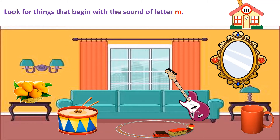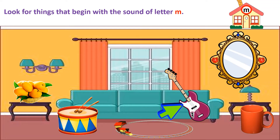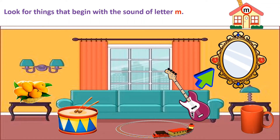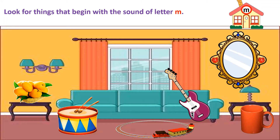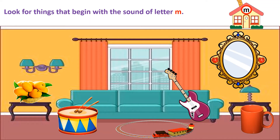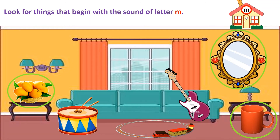Let's look at the things in his house. There are mangoes. There is a drum. There is a train. A guitar. A mug. And a mirror. Out of these things you have to look carefully and find the things that begin with the sound of letter M. Are you ready? Your time starts now. Did you find them all? Great job! There is mango, mug, mirror. Very good!